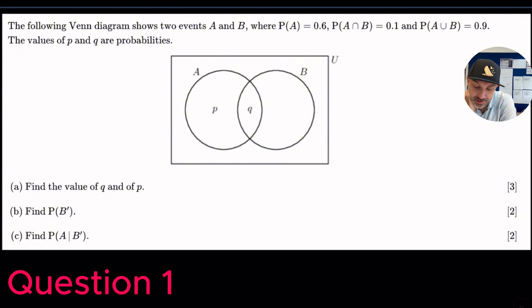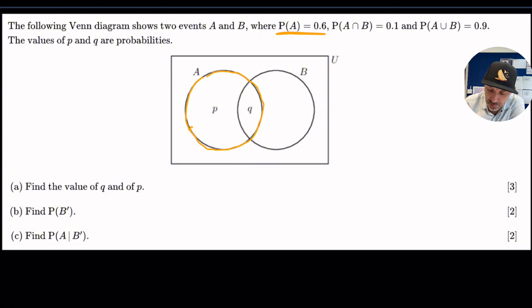So here we have a Venn diagram. Events A and B are shown. The probability of A occurring is 0.6. Now be careful here because that is the whole. So that is the whole circle that the probability of A is 0.6. So that includes P and it includes Q. But it does say here that probability of A and B happening is 0.1. So that's really useful information because we can put that straight in now.